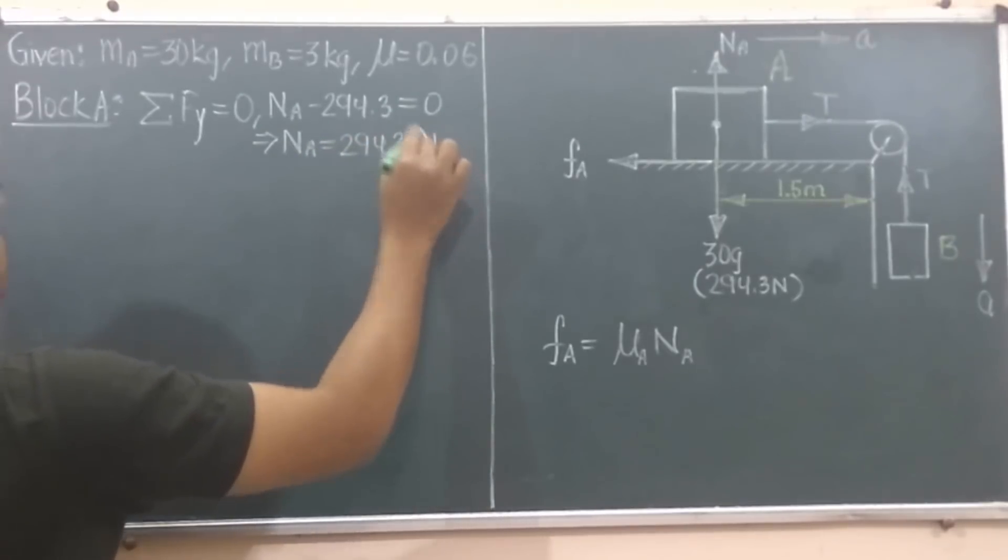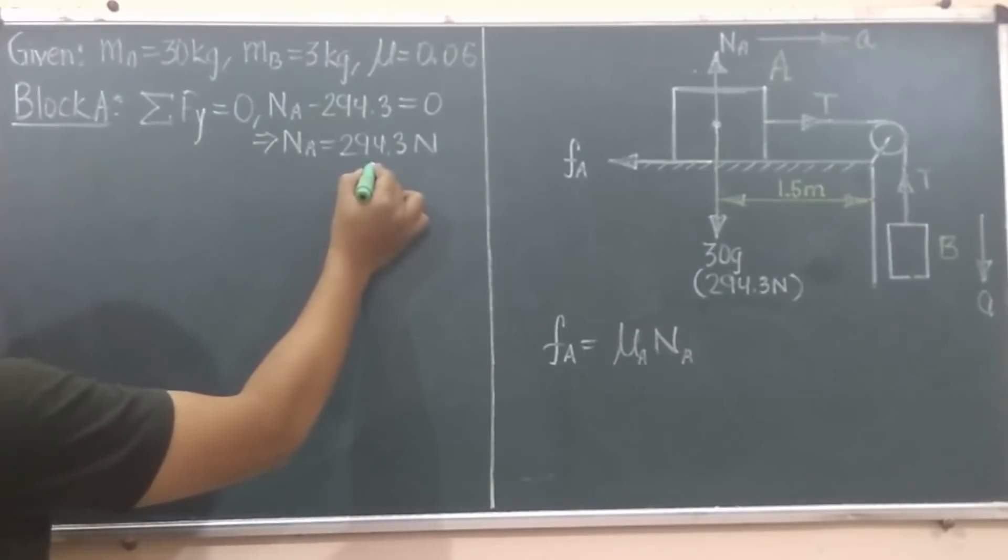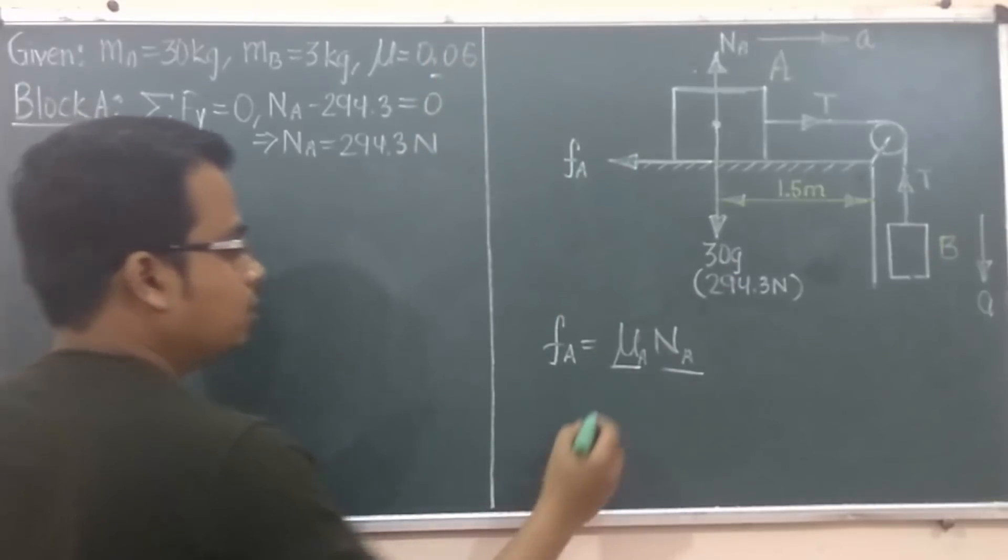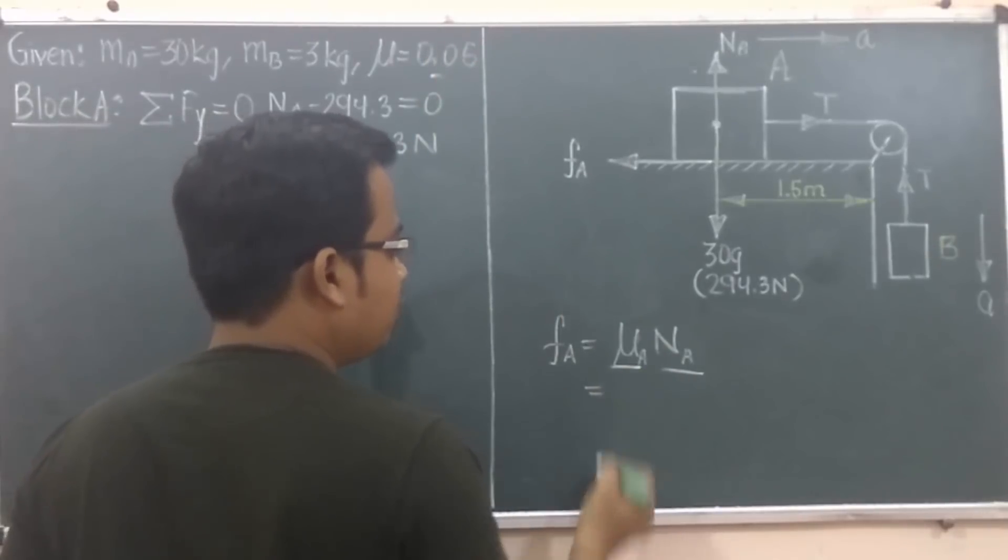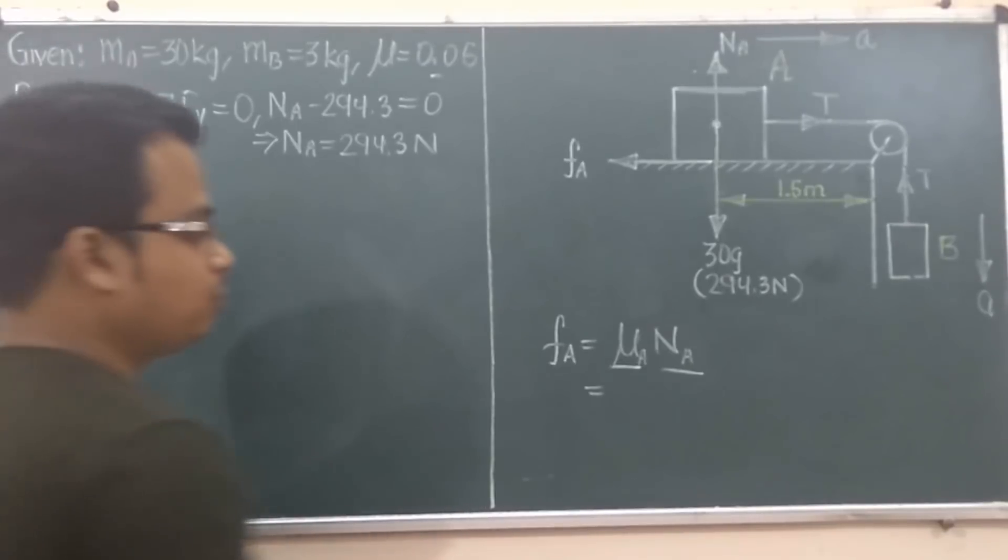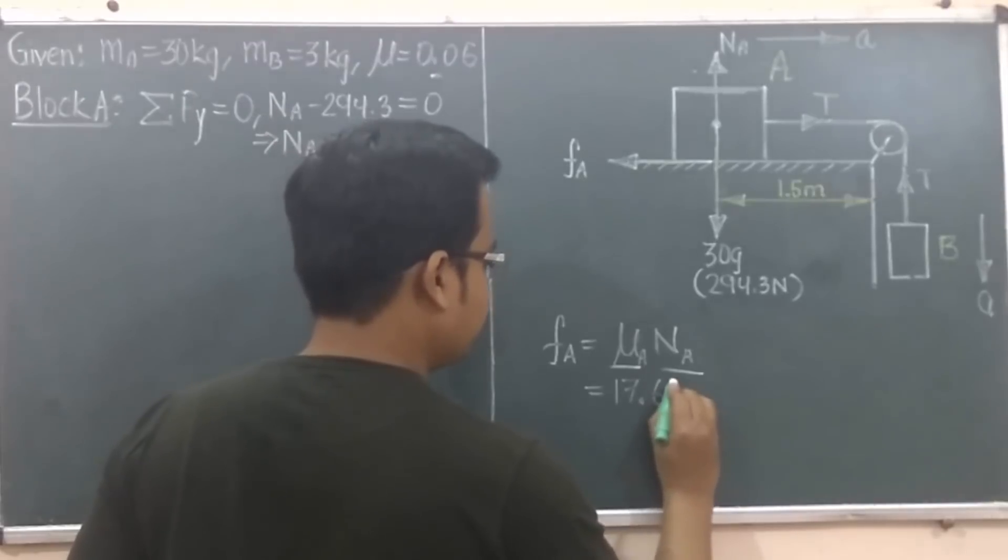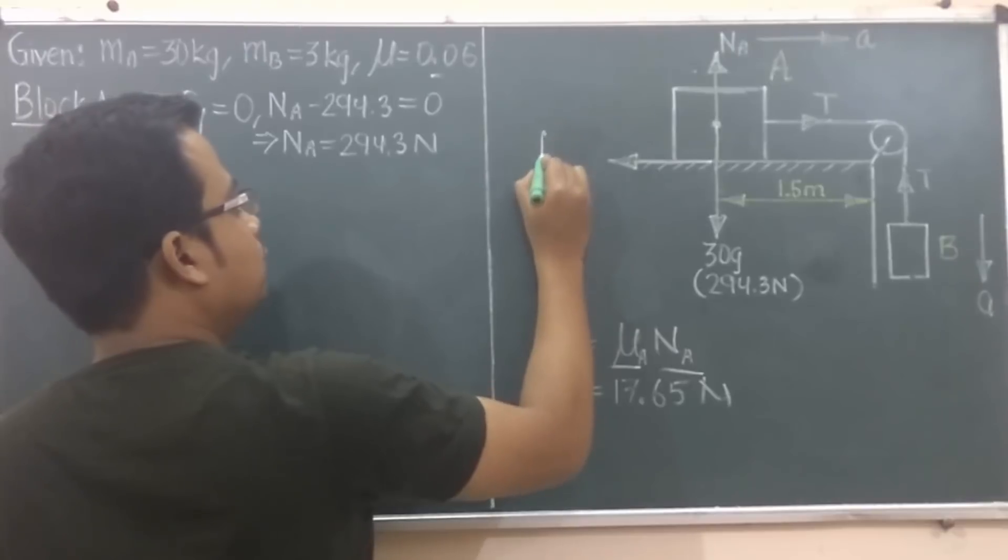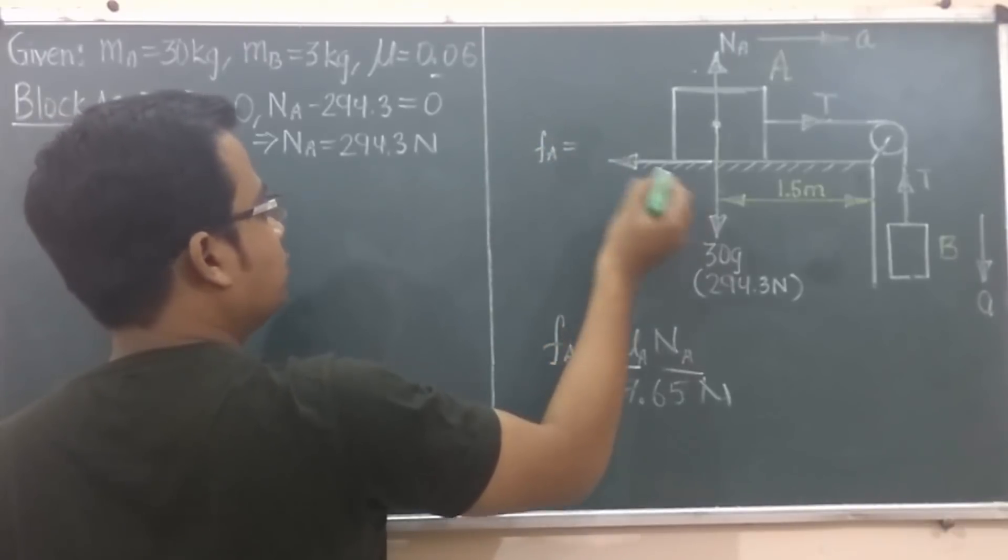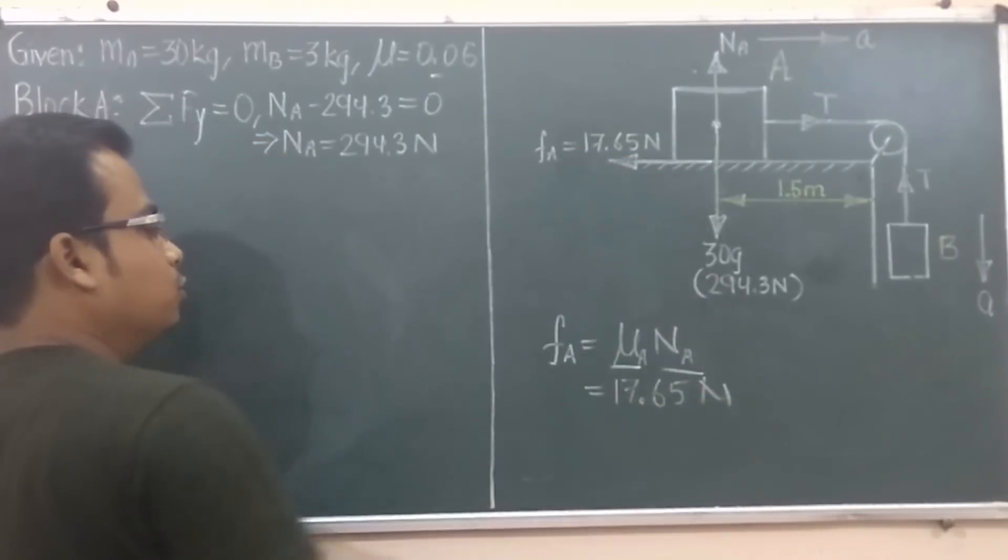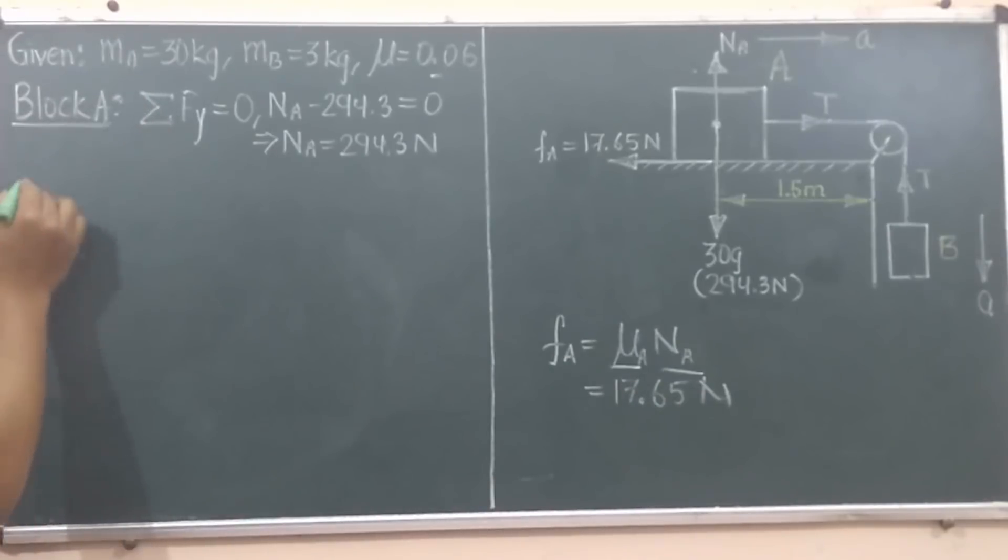So we have this N_A, 294.3 over here, and we have this μ_A over here, 0.6. So you just do this calculation and F_A should work out as 176.58 newtons. So let me write over here: frictional force offered from the surface onto this block is 176.58 newtons in the opposite direction of the motion. Done and dusted.